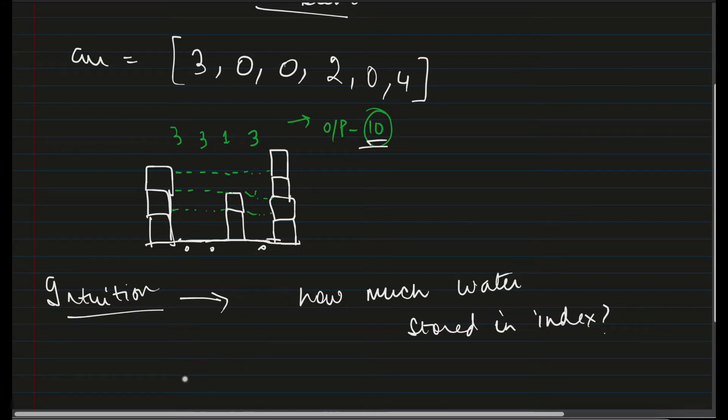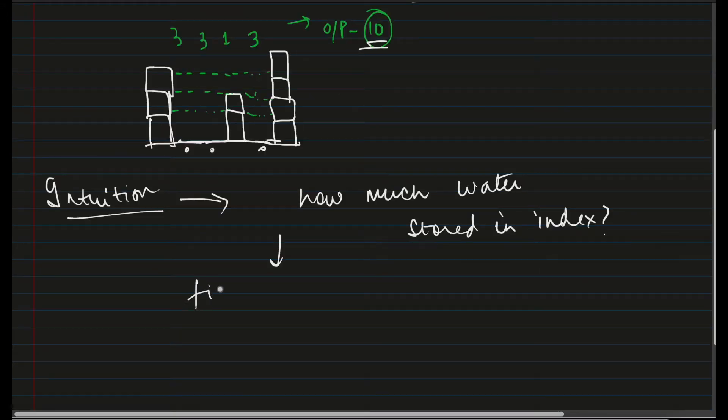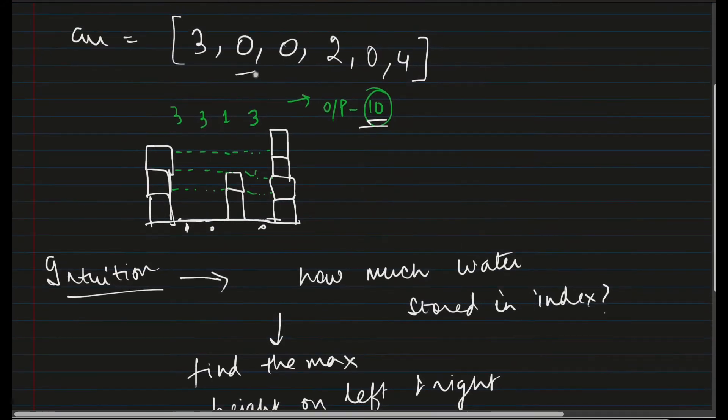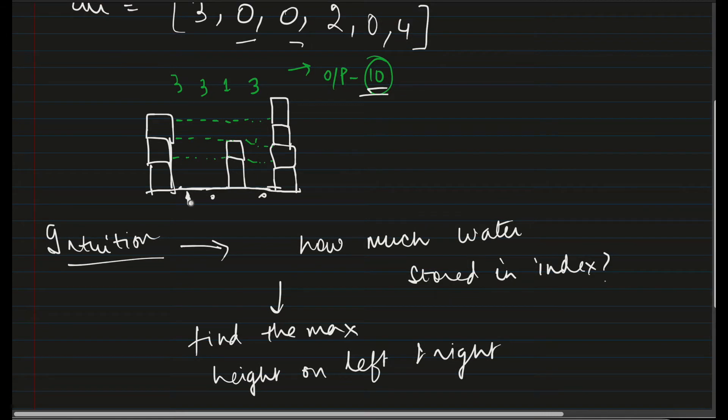How can I know this? To know this, we have to find out the maximum height of the blocks on either side. Find the max height, the height of the blocks on left and right. I'll give a small example. Let's say I am here. Here we have two indexes, right? Because we have 0 and 0. When I am over here, what is the maximum block on the left hand side? This one, which is of height 3. What is the maximum height of the block on the right hand side? This one, which is of height 4.